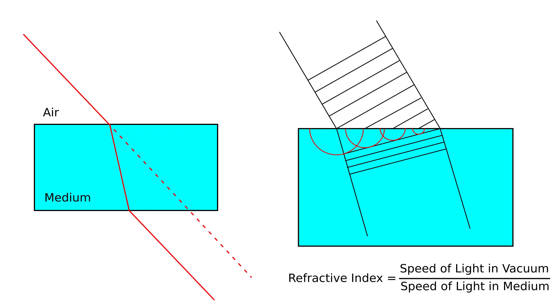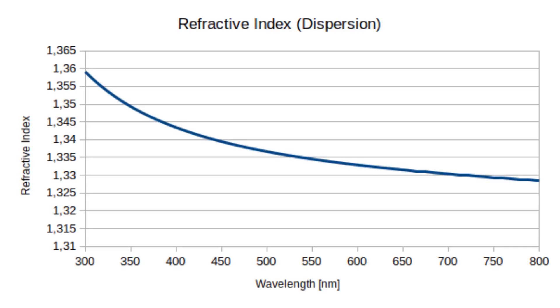Blue light has a wavelength of around 300 nanometer, whereas red light has a longer wavelength of around 800 nanometer. The refractive index as a function of the wavelength is shown in this graph.